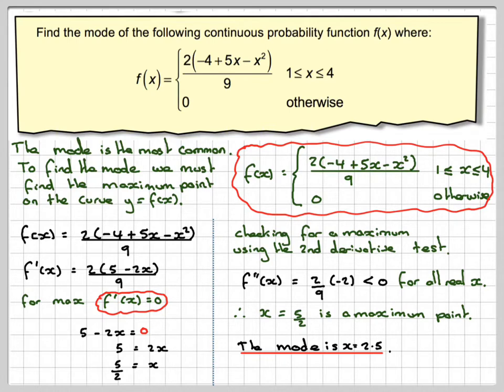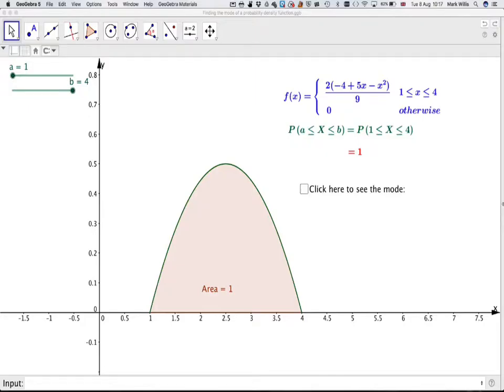Now we can look at this using some GeoGebra apps. I made this GeoGebra app with the link I will put in the notes of the video. So here we have the function defined from between 1 and 4 only. We can see that the area is 1.